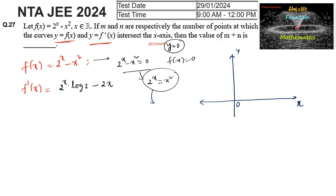Let us take the 2^x graph: when x = 0 it is 1, when x = 1 it is 2, when x = 2 it is 4, and when x = -1 it is 0.5, so the graph comes down. The graph for x² is a parabola.